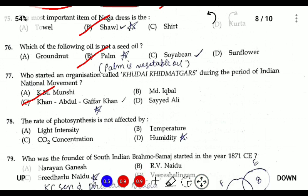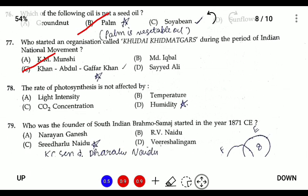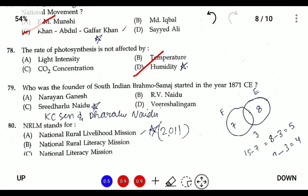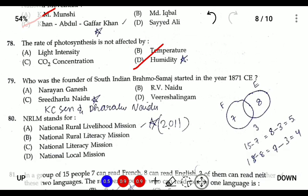Question seventy-eight: the rate of photosynthesis is not affected by humidity. Question seventy-nine: the founder of the South Indian Brahmo Samaj in 1871 was Sridalu Naidu, who formed the Brahmo Samaj of the South along with Keshab Chandra Sen.